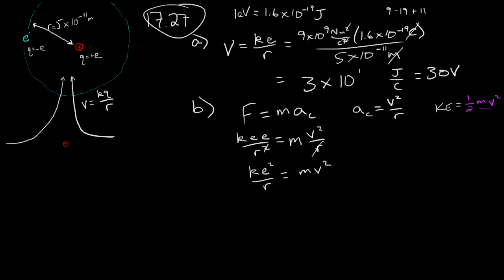And we have K times E squared over R is equal to M V squared. Well now, if I divide both sides of an equation by 2, I get the same thing. So one-half M V squared is equal to K E squared over 2R. So I need to divide both sides of the equation by 2. This is my kinetic energy.